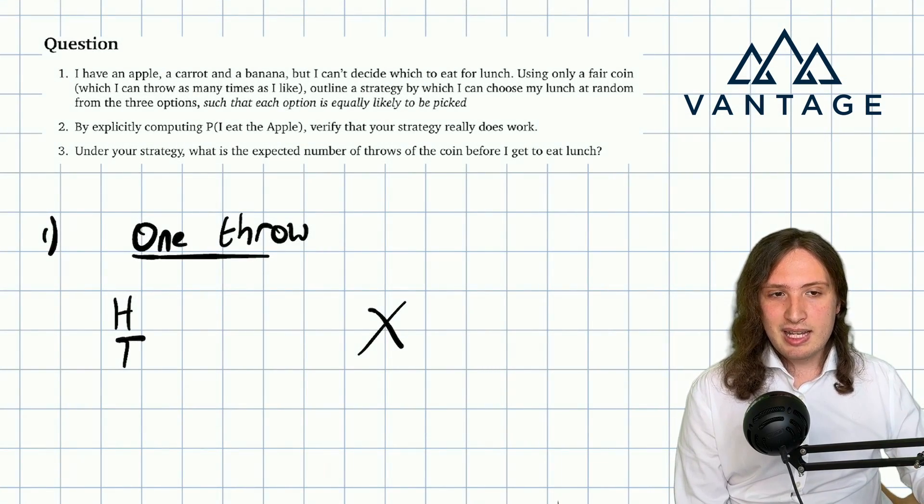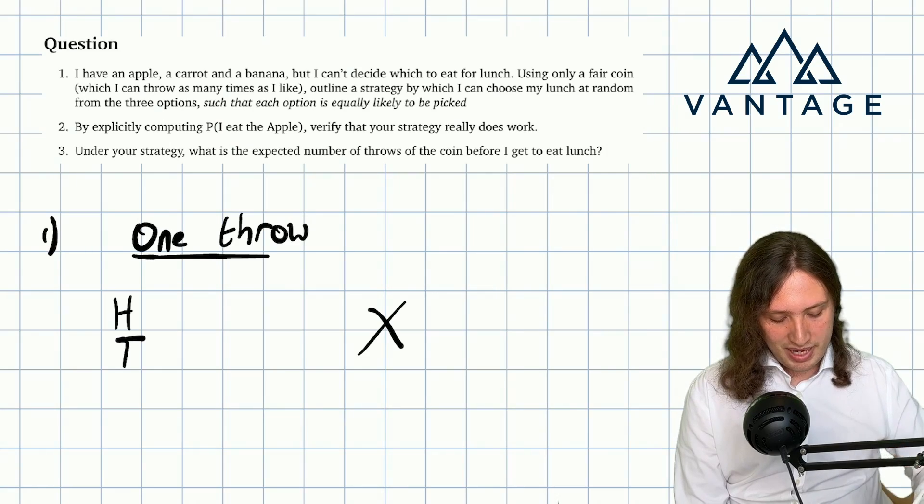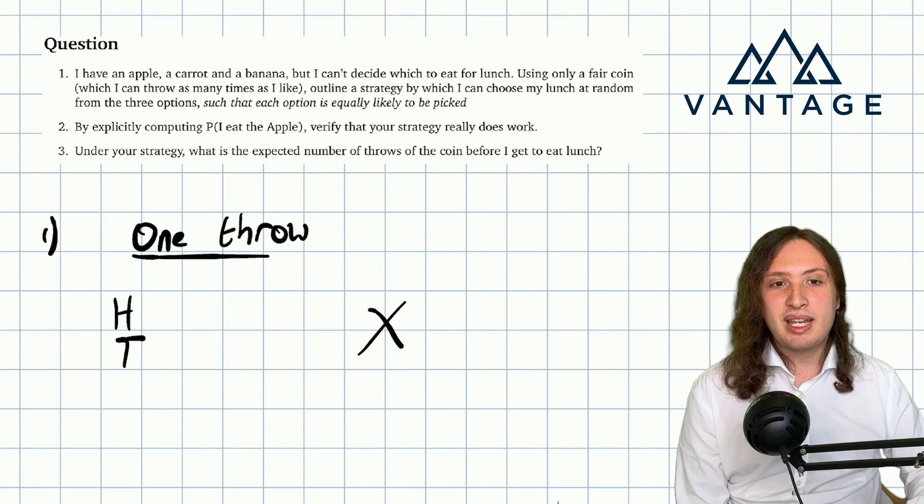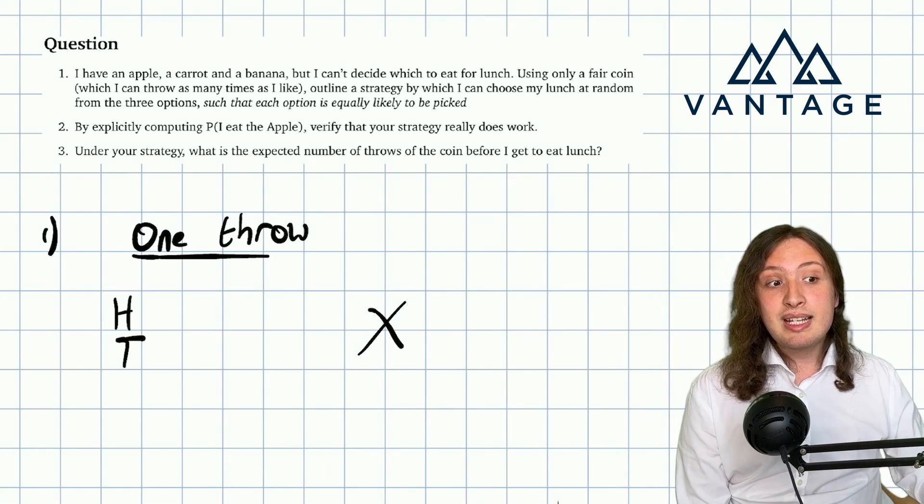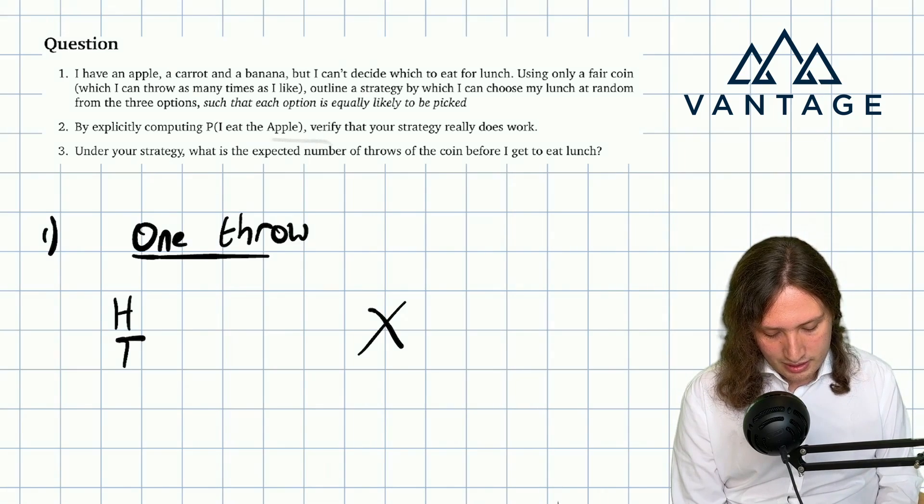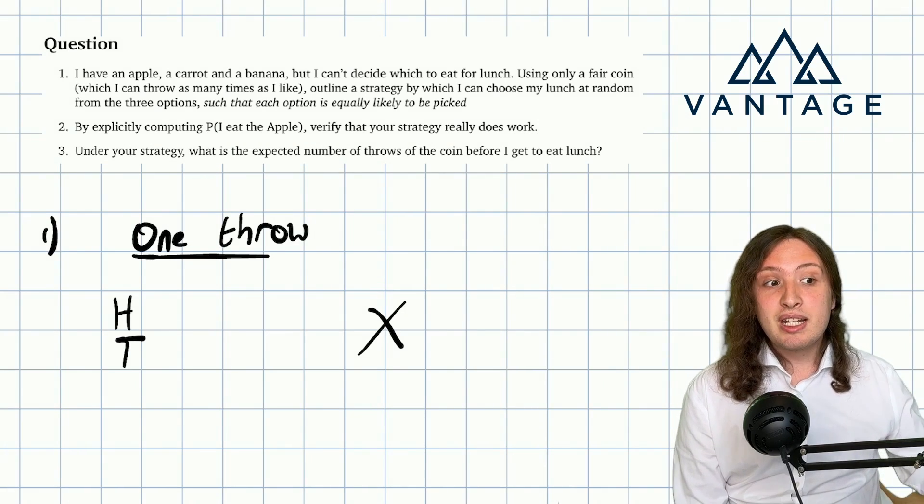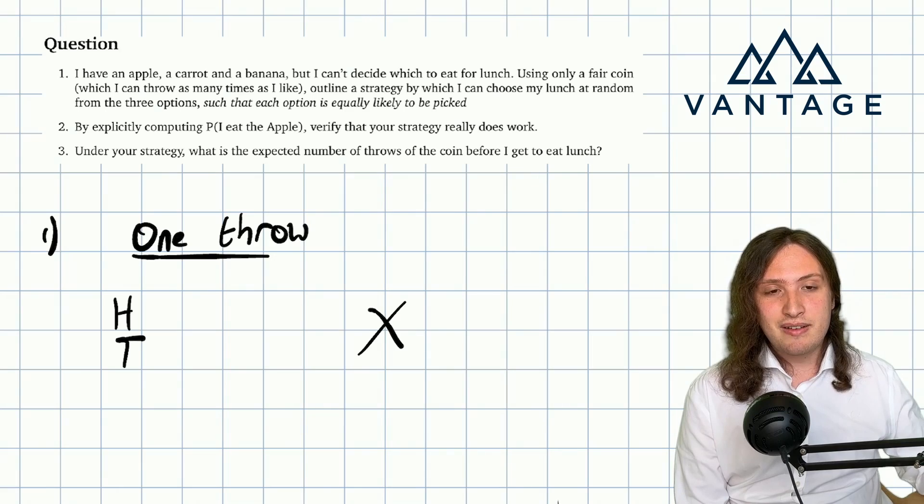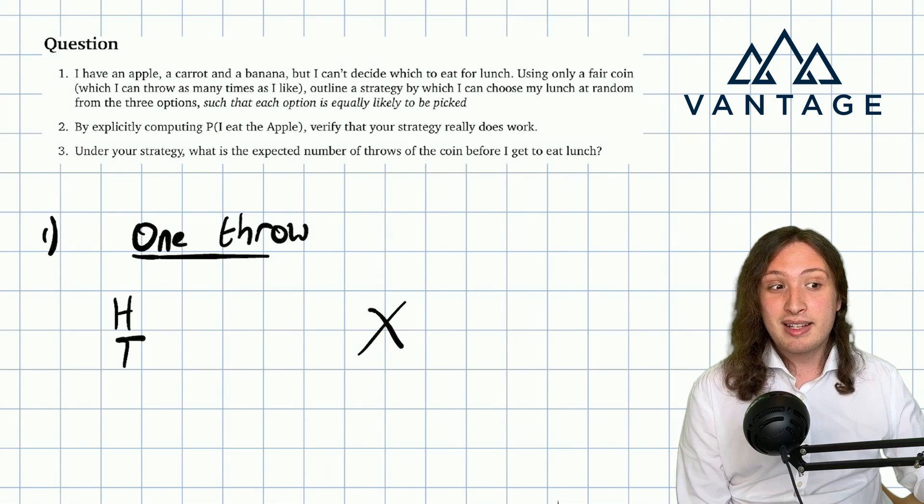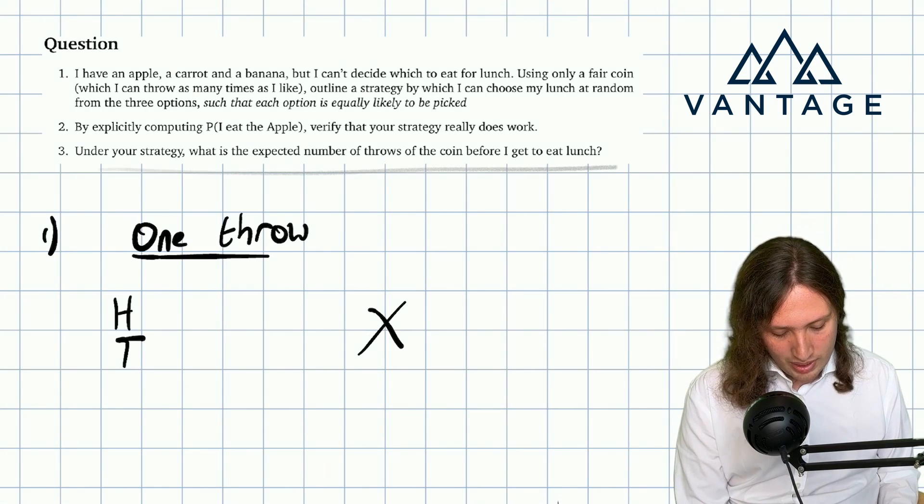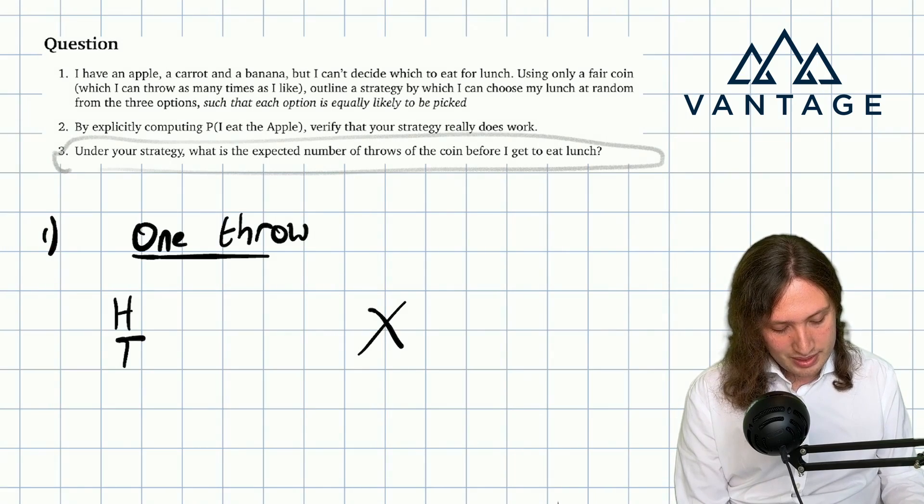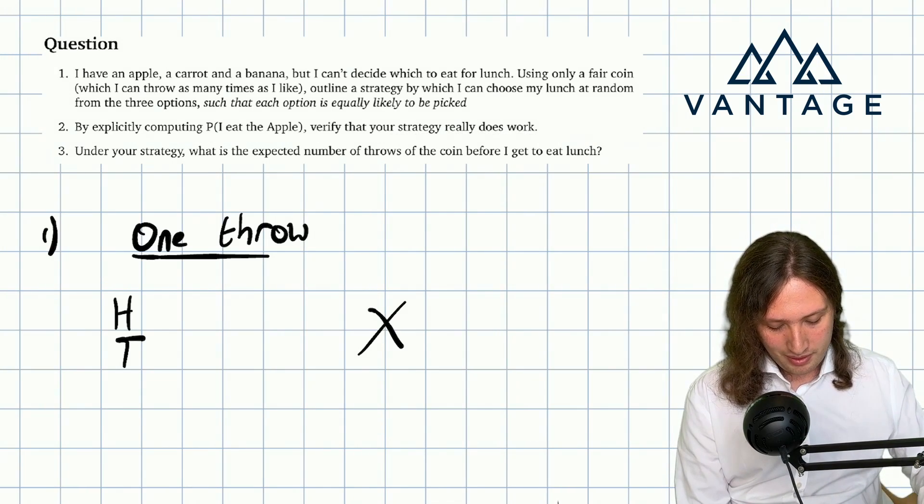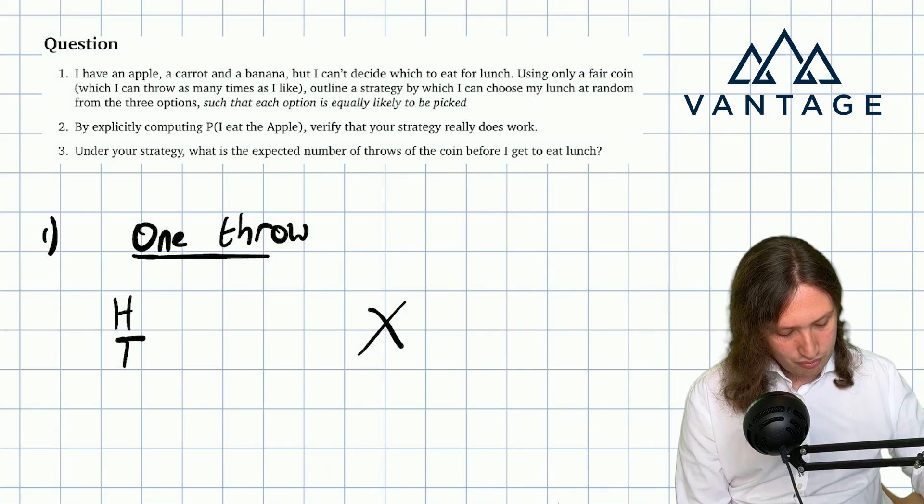Now, finally, in part three, we need to decide the expected number of throws of the coin before we get to eat lunch. Now, I will just point out that in all likelihood, this last part of the question will only have been asked to candidates who were already doing very well and had already gotten very far in the interview. So even if you don't quite manage to crack this part, there's still a very good chance you'll be receiving an offer just for having gotten that far. So expected number of throws.